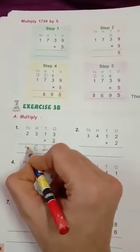And 3 carried to thousands place. Now multiply thousands column. 4 ones are 4. Add carried number 4 plus 3, 7. Thus, 1895 multiplied by 4 is equal to 7580. Children, complete exercise 3B.